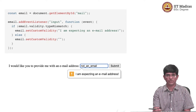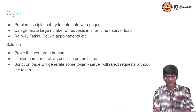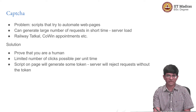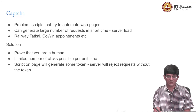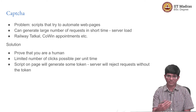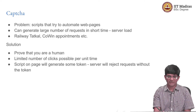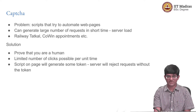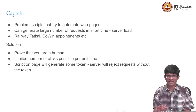JavaScript obviously also helps you add to what you can do with validation. Now, validation is not the only thing you can do with client-side computation — you can also do things like CAPTCHA. The basic problem CAPTCHA is trying to solve is that whenever you have a web page, somebody will probably try to automate a script to automatically hit the page multiple times. Examples include IRCTC for railway Tatkal bookings, where people try to write scripts that automatically bypass everything and book before someone else can.